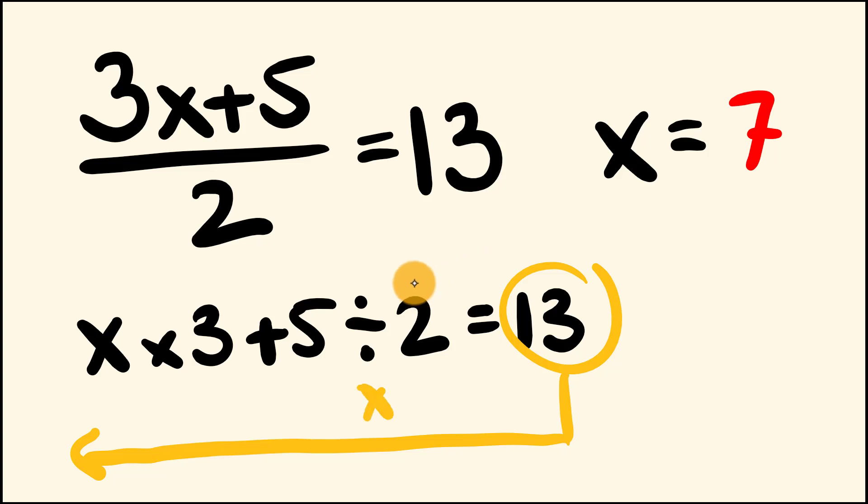So instead of dividing by 2, we multiply by 2. Instead of adding 5, we subtract 5. Instead of multiplying by 3, we divide by 3, and we will get our answer. So let's go through and do this.